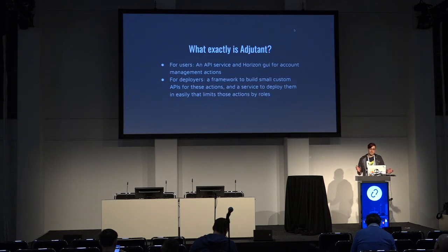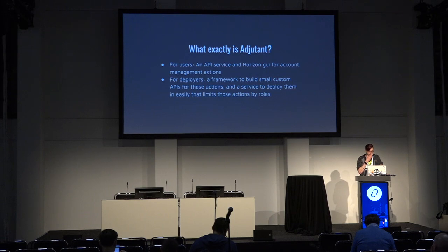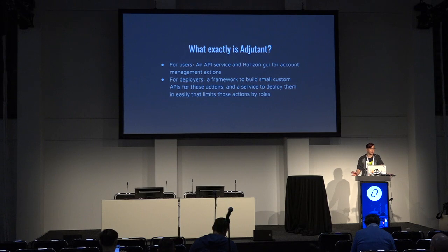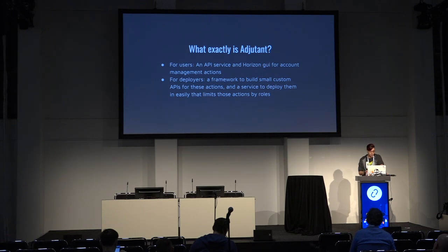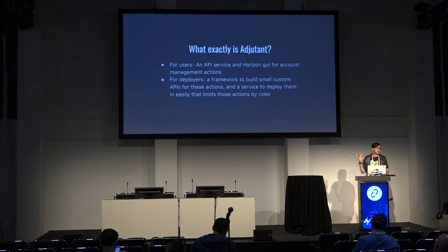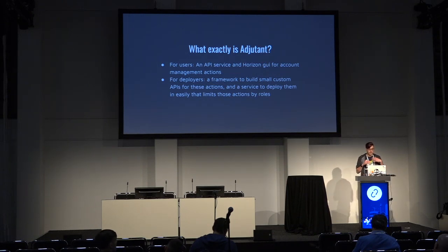So what exactly is Adjutant? You now know its history, why it exists, and that it's an official project. For users, it is an API service with a Horizon-based GUI that has role-based access control for controlling what APIs you can talk to, giving users access to account management actions. Underneath that is a framework for building workflows in code, and then you can build APIs around them and expose them to your users.